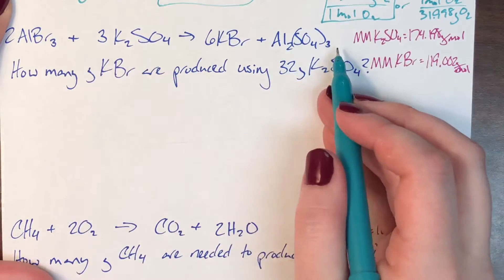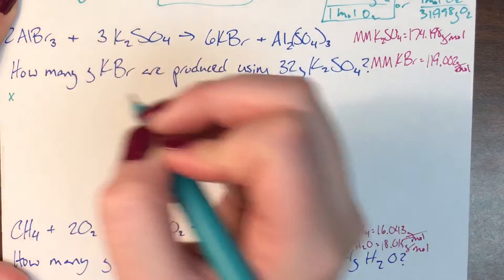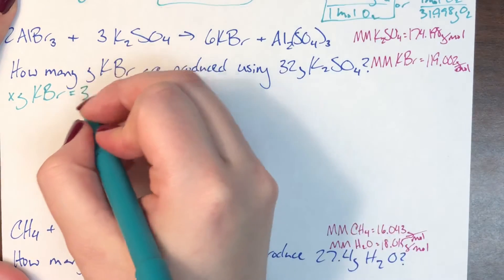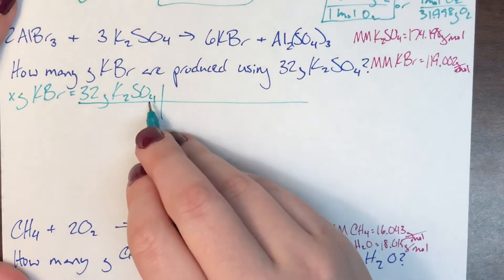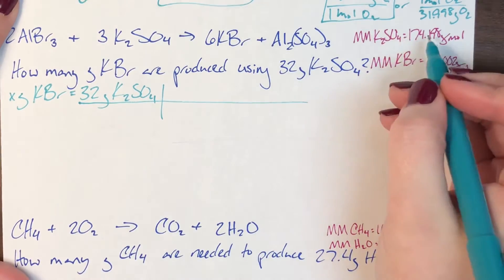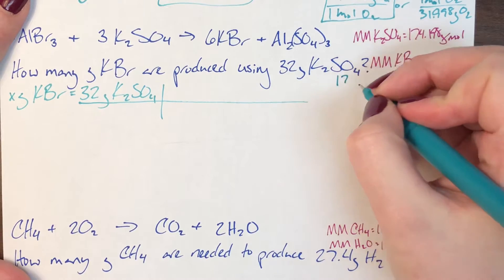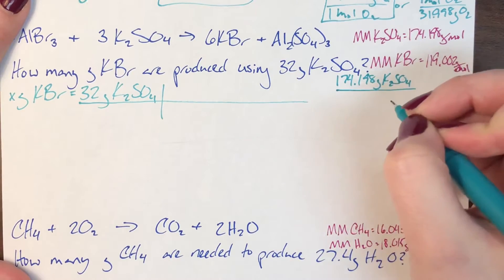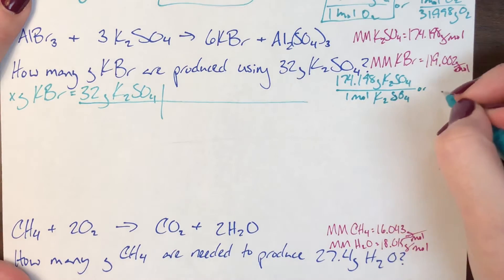Second problem. I again have a balanced chemical equation with molar masses calculated. The problem says: how many grams of potassium bromide — x grams potassium bromide — are produced using 32 grams potassium sulfate. I'm currently in grams of potassium sulfate, so I need the molar mass of potassium sulfate, which is 174.198 g/mol.